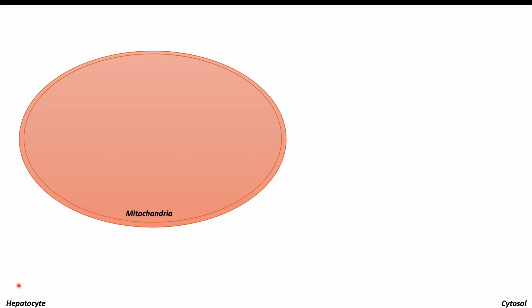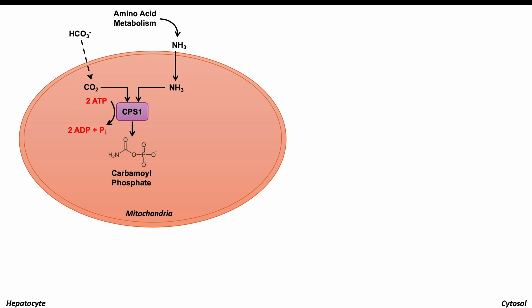Now let's talk about the urea cycle to better understand the pathophysiology of OTC deficiency. We're looking at the cycle in a hepatocyte, which is a liver cell. Parts of the cycle occur in the mitochondria and parts in the cytosol. When we metabolize amino acids, there's leftover ammonia formed. That ammonia enters the mitochondria and along with CO2 is combined by the enzyme carbamoyl phosphate synthetase 1 (CPS1), utilizing two ATP, to form carbamoyl phosphate.